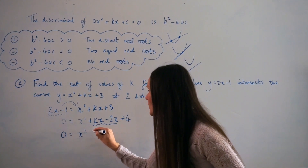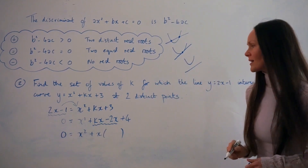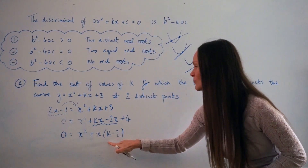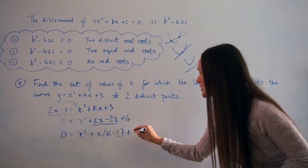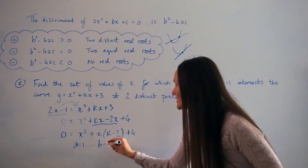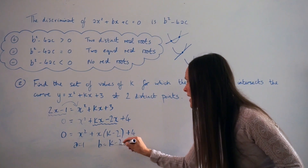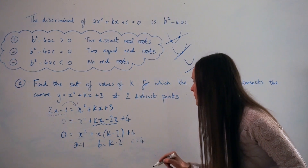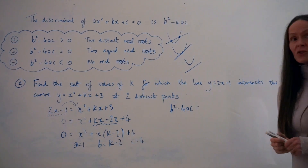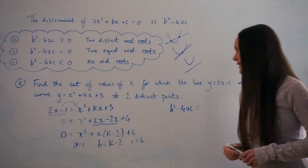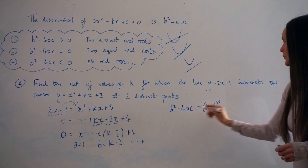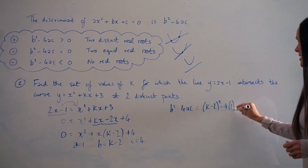Writing it as x squared plus x times the quantity k minus 2, plus 4. You can verify that expanding the brackets takes you back to the previous line. My values of a, b, and c are: a equals 1 because we have 1x squared; b equals k minus 2; and c equals 4. So we work out the discriminant b squared minus 4ac, substituting in: k minus 2, all squared, minus 4 times 1 times 4.